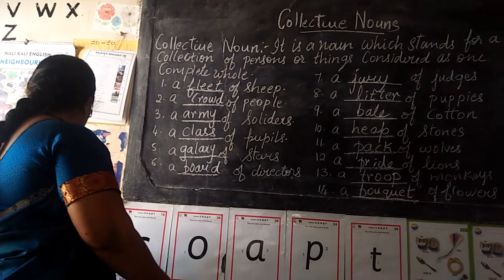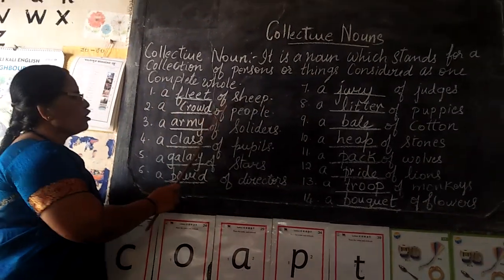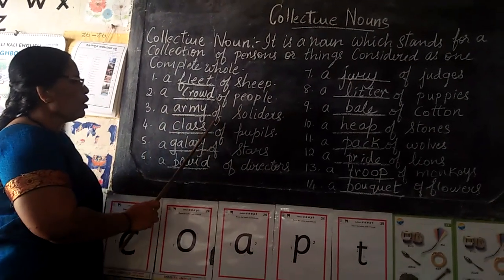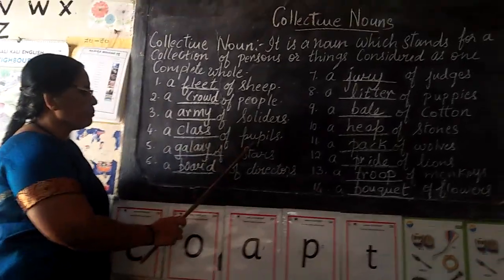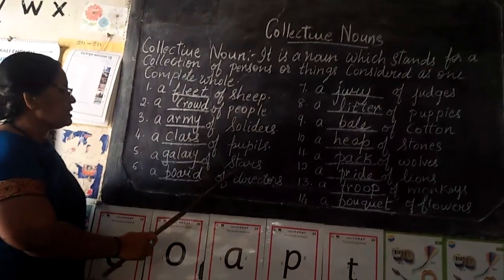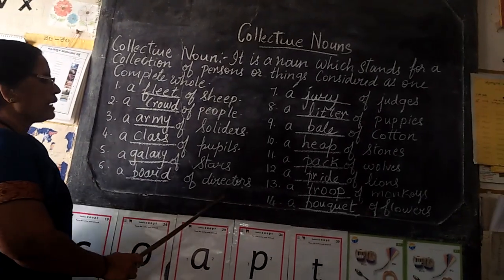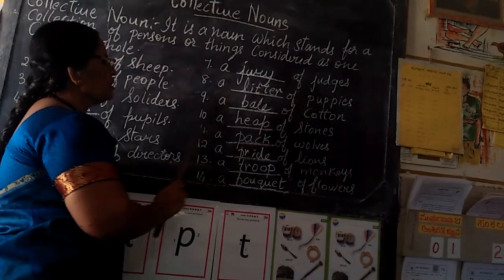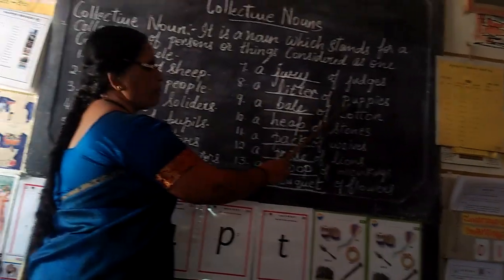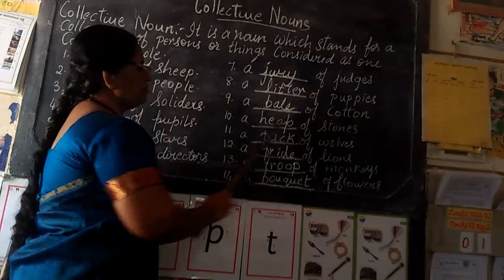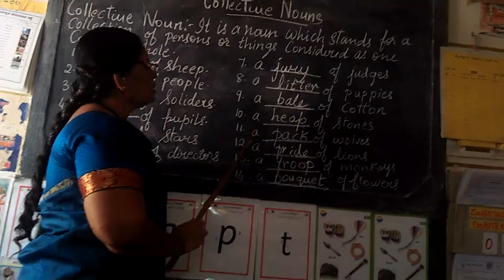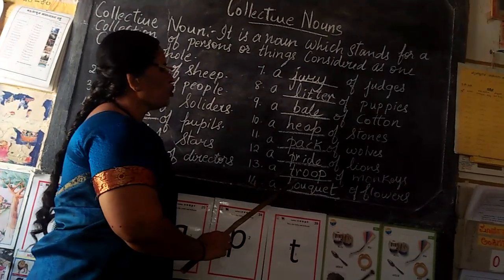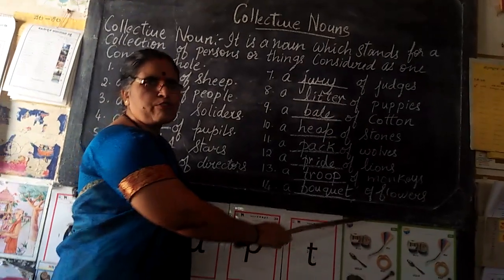Now I shall read for you. A fleet of sheep. A crowd of people. An army of soldiers. A class of pupils. A galaxy of stars. A board of directors. A jury of judges. A litter of puppies. A bale of cotton. A heap of stones. A pack of wolves. A pride of lions. A troop of monkeys. A bouquet of flowers.